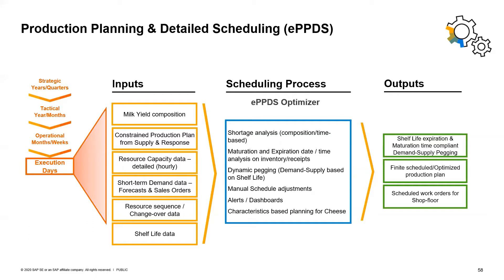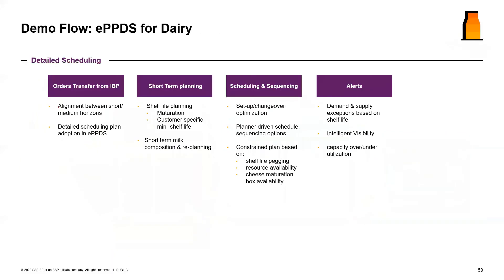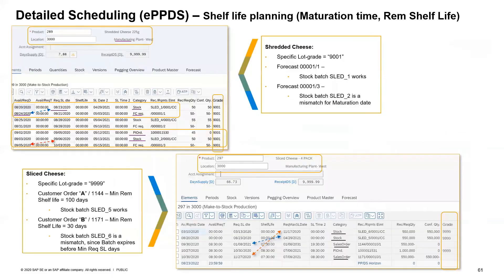There are two buckets in which the process happens within PPDS: planning and scheduling. In scheduling, there are two ways to go about it — the optimizer can do everything automated, and then you have the ability to do manual adjustments on top. The outputs expected from shelf life planning and the PPDS optimizer are threefold: a shelf-life-compliant and maturation-compliant demand-supply plan, a finitely optimized schedule that is shelf-life compliant and accounts for changeovers, and a schedule of work orders that can be handed over to the shop floor.